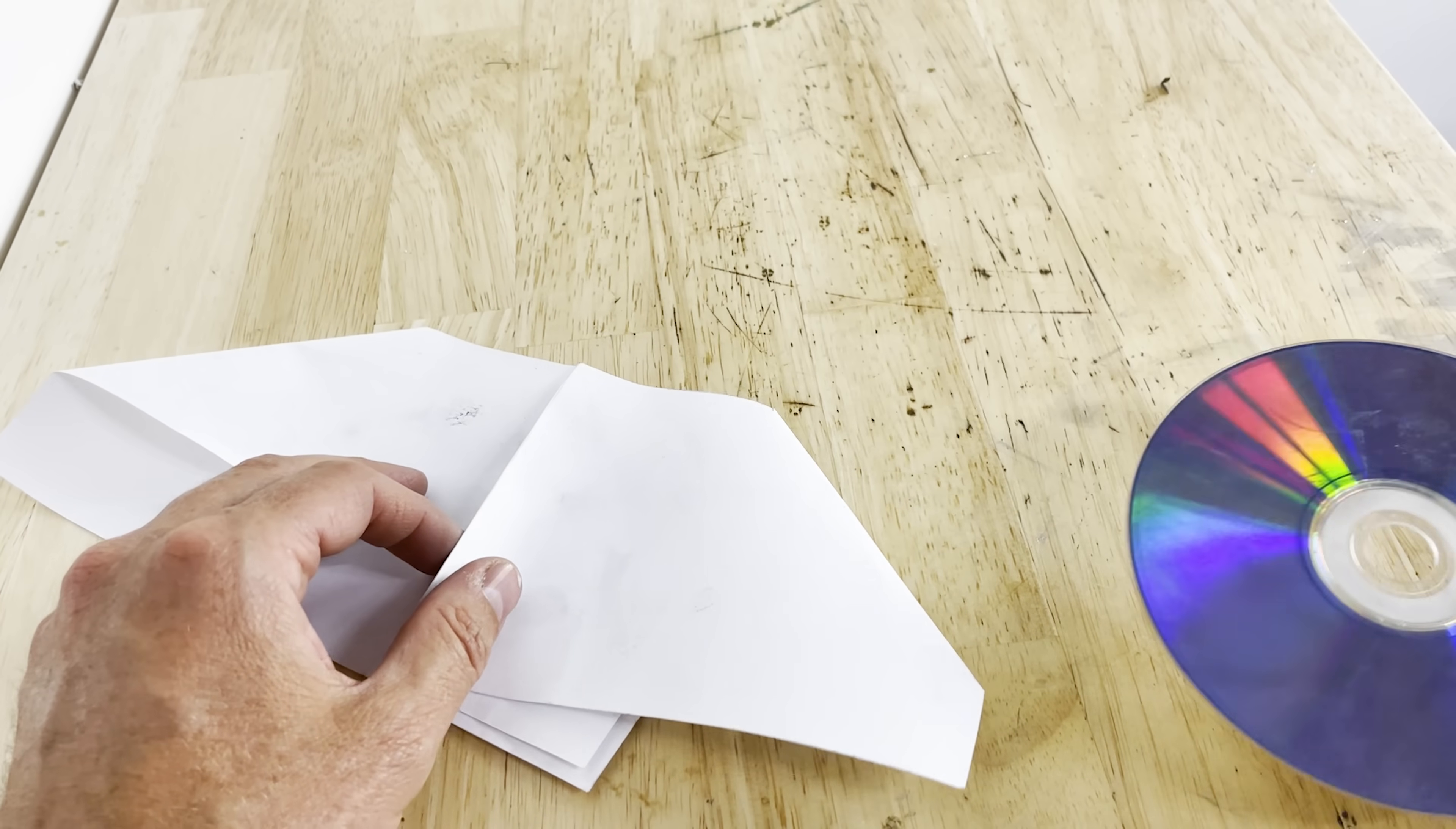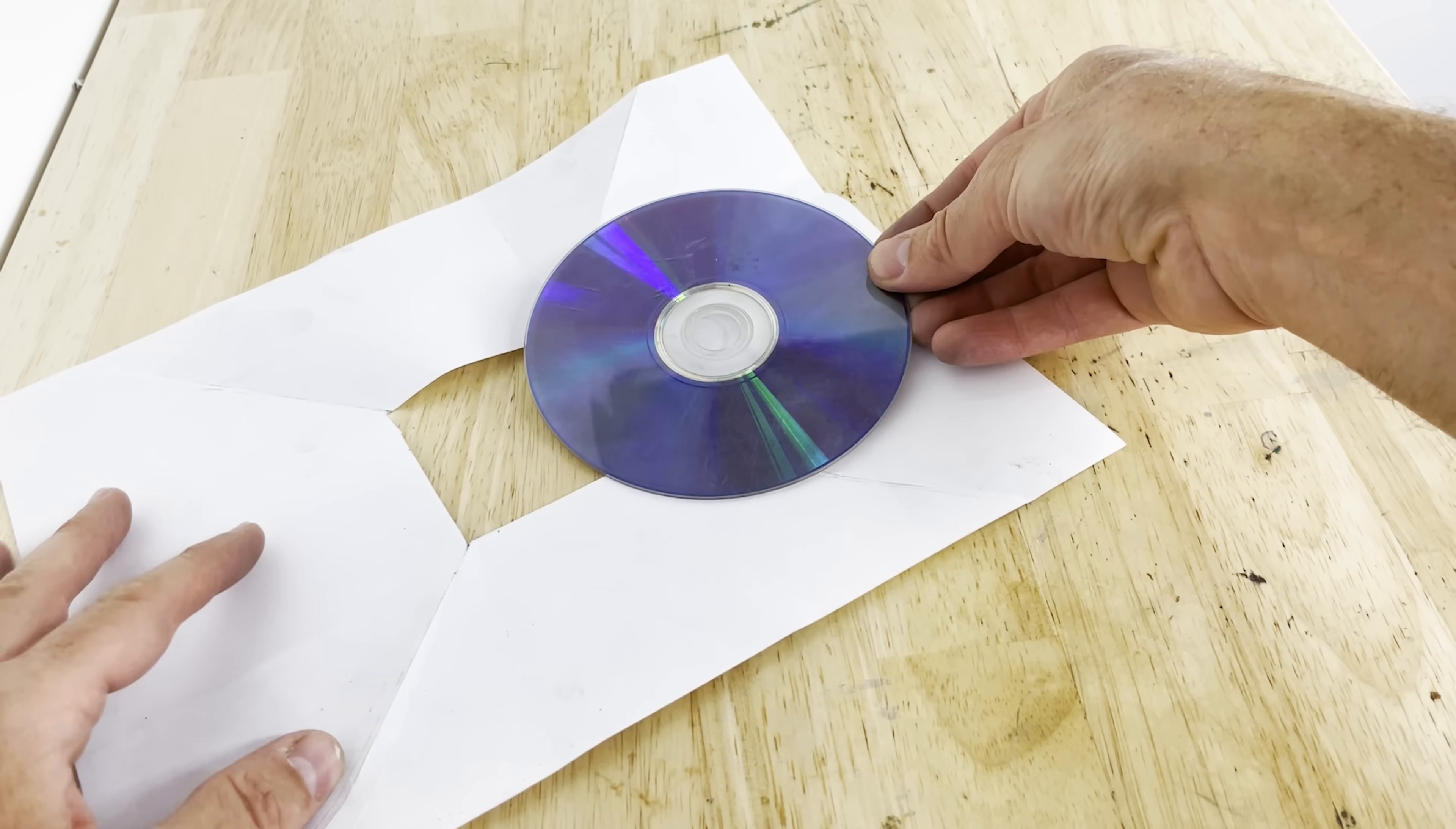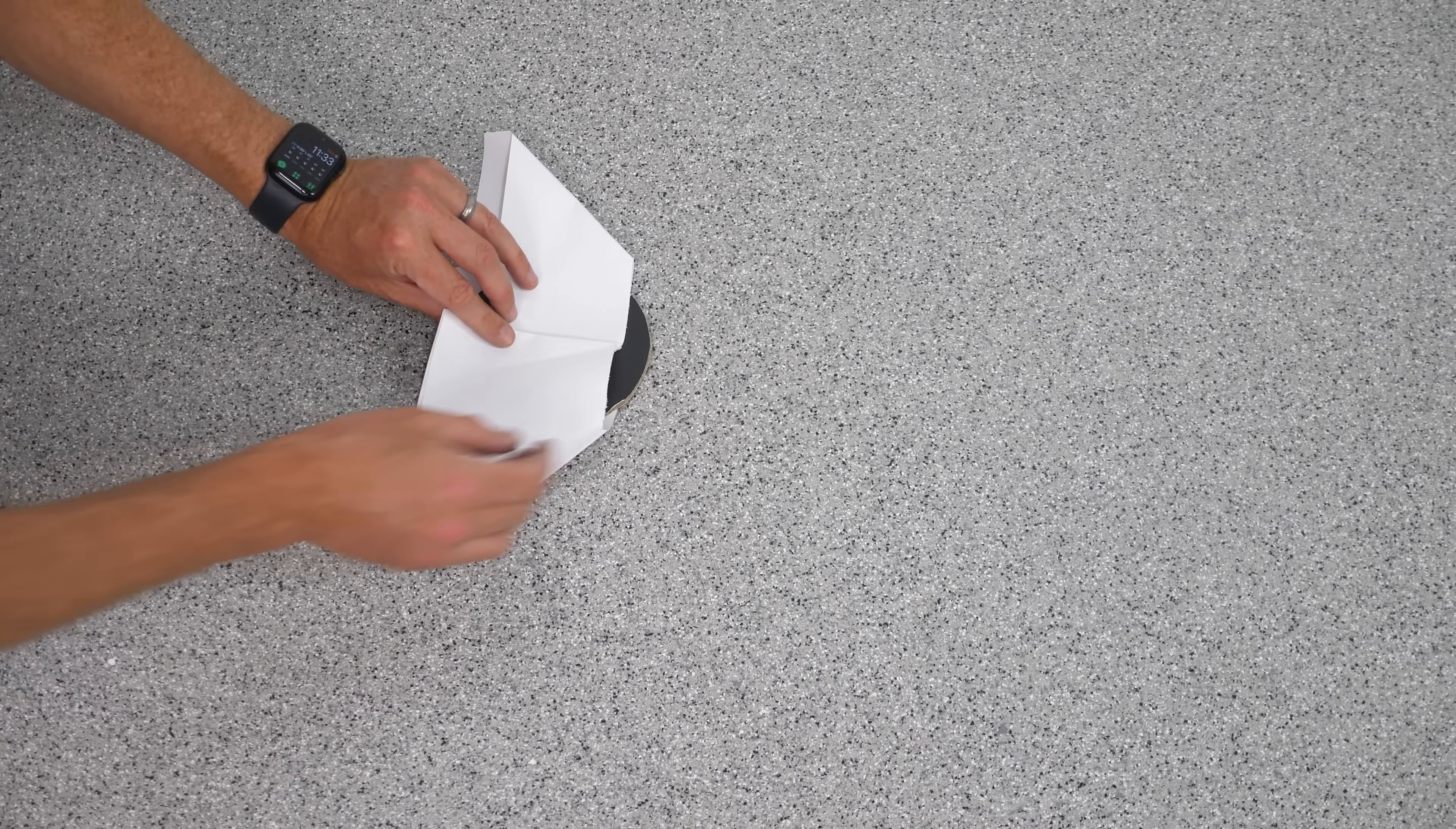Before we fold the paper, the largest distance is the diagonal of the square. But that still isn't big enough for the disc. But when we transfer the 2D square into a 3D structure, then the disc magically fits.